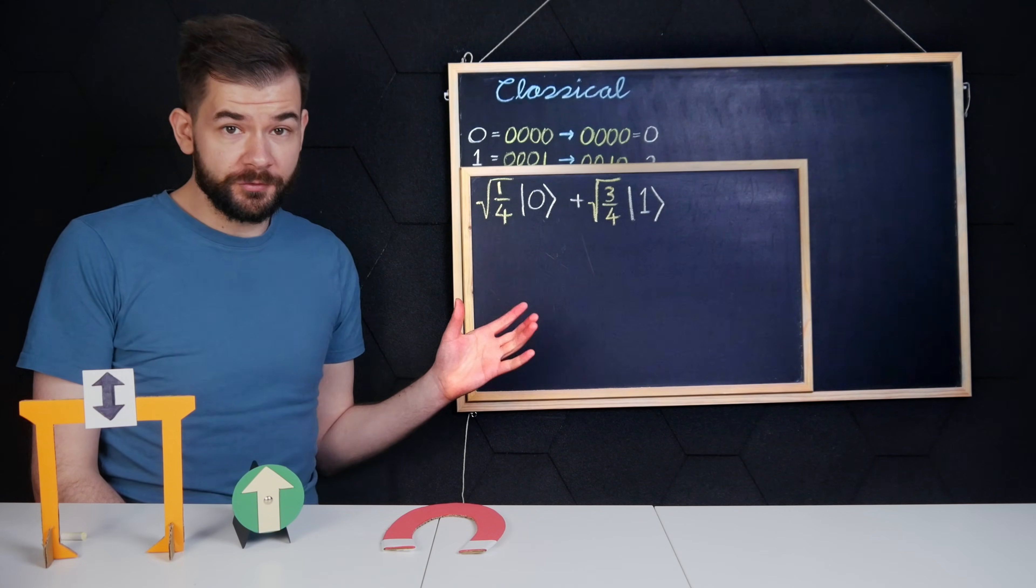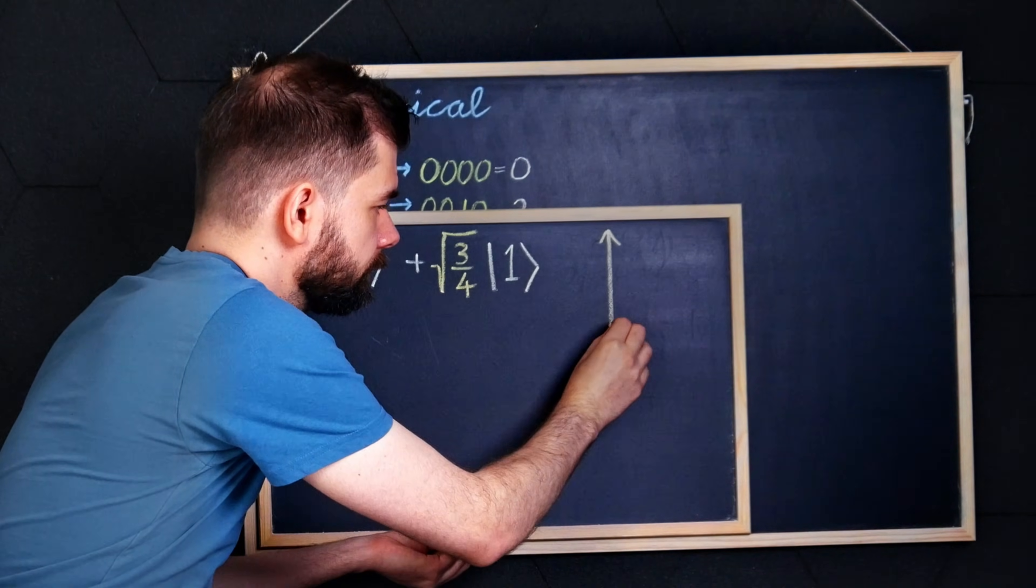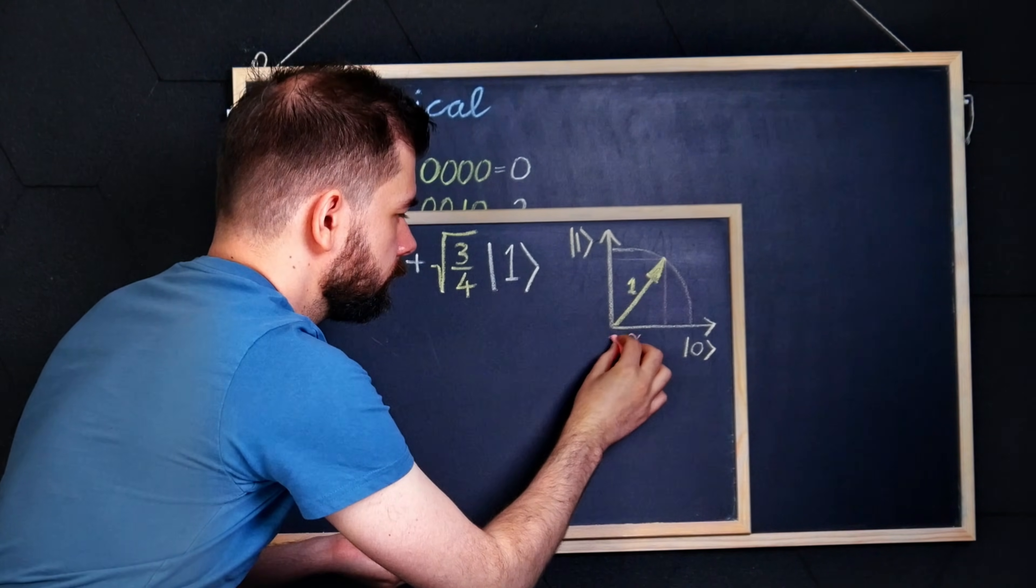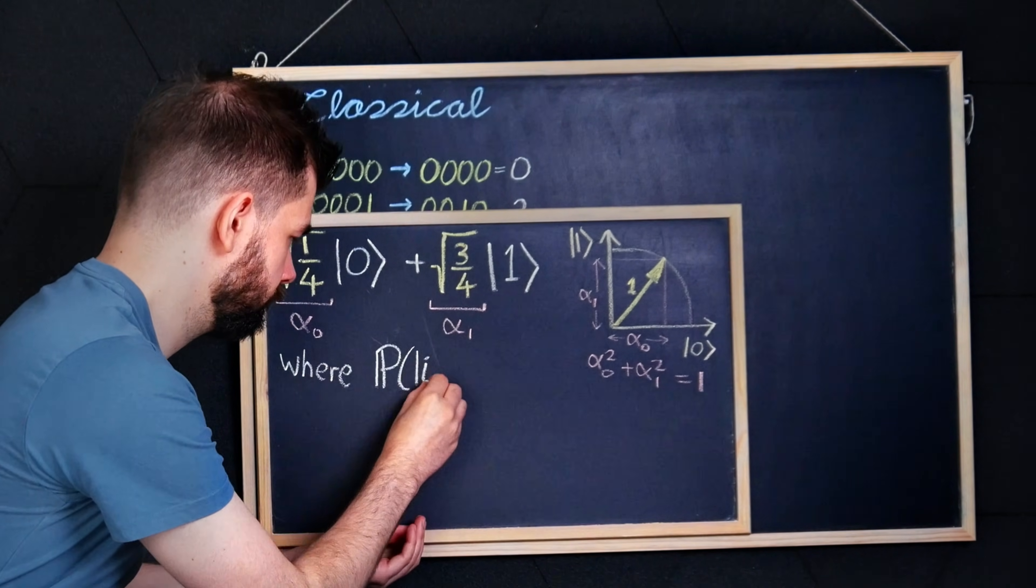One nice byproduct of this standard way is that you can visualize these as a vector of length one, seeing as the length is calculated by the root of the sum of the squares, which must be one due to the fact that all these probabilities must sum to one.